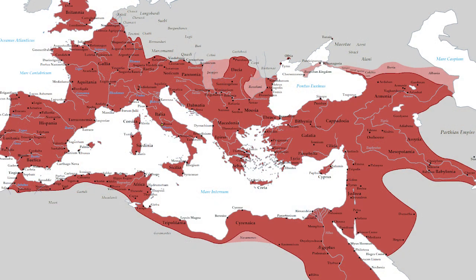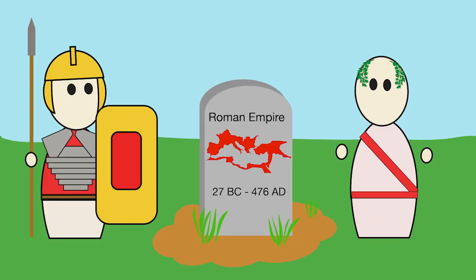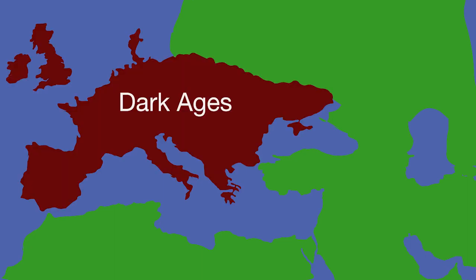The Roman Empire lasted a solid 503 years, from 27 BC to 476 AD, and with the end of the empire came the end to really great roads. Europe was officially in the Dark Ages, and both art and technology went right out the window.